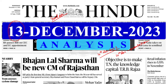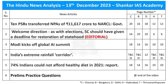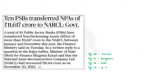Now back to our business, let's look at the list of articles which we are going to discuss today. The news here is that the Public Sector Banks have transferred Non-Performing Assets or NPA of more than 11,617 crores to the NARCL between January to November of this year. In our discussion today, we will see what is NPA and we will also discuss about NARCL.